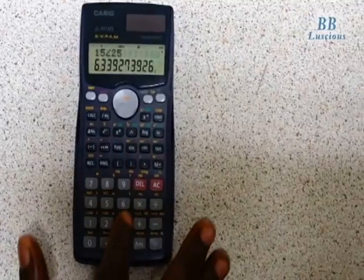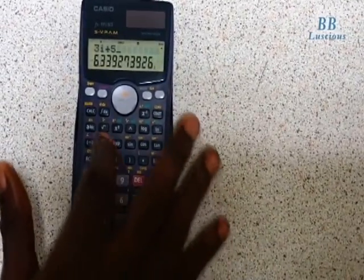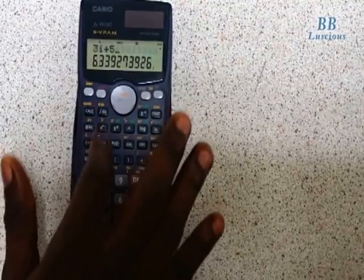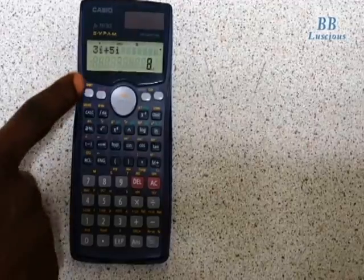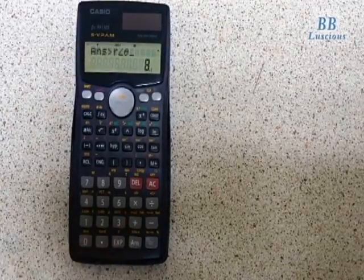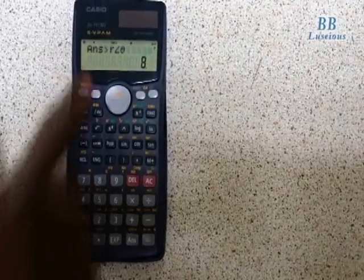Let me do a very simple example: 3i plus 5i equals 8i. How do I convert it? Shift Enter for angular form. This equals 8i, and then the angle...